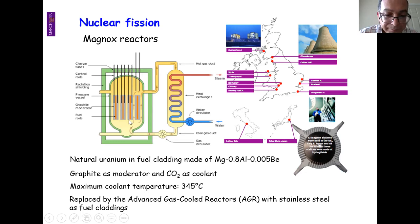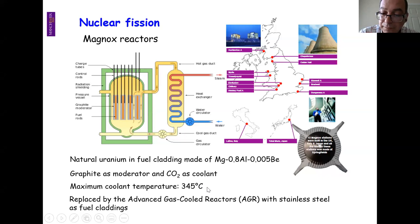Initially in the UK we had the Magnox reactors, where the cladding encapsulating fuel pellets was made of a magnesium alloy, with graphite as moderator and CO2 as coolant. However, that alloy has a maximum safe operating temperature of around 350°C, which limited the thermal efficiency of those reactors. Over time, the magnesium alloy was replaced by stainless steel, giving rise to what we call the Advanced Gas-Cooled Reactors, or AGRs, whose locations you can see here both in the UK and outside.